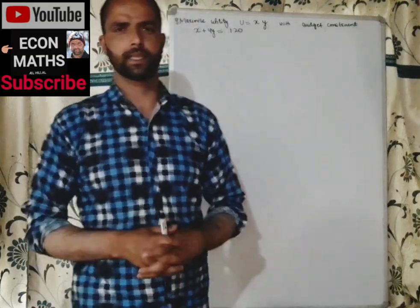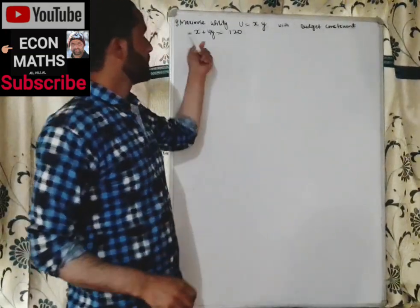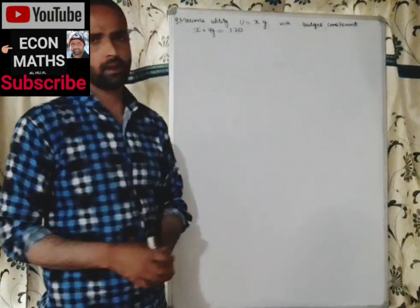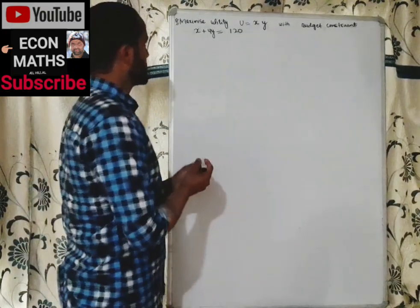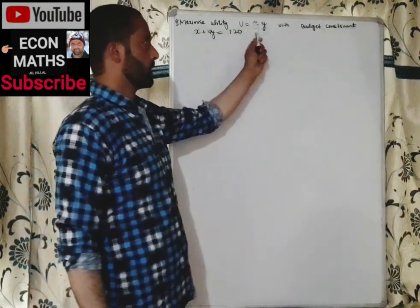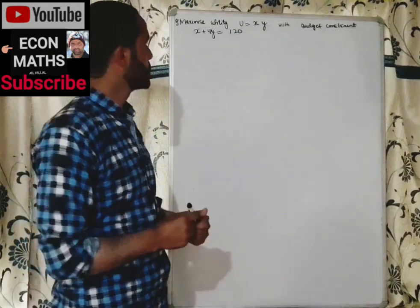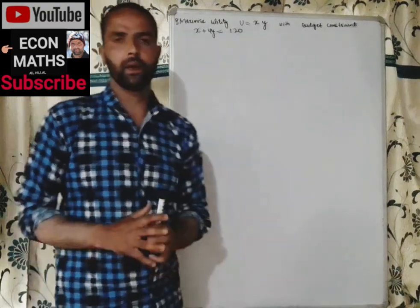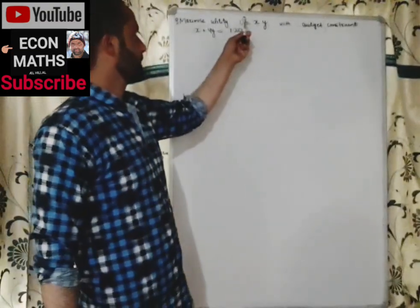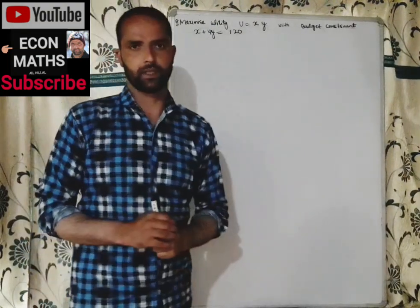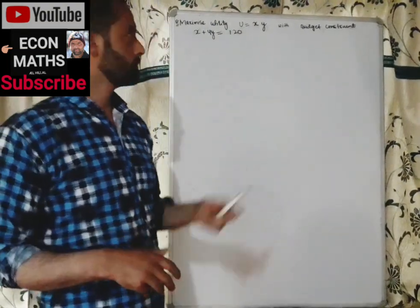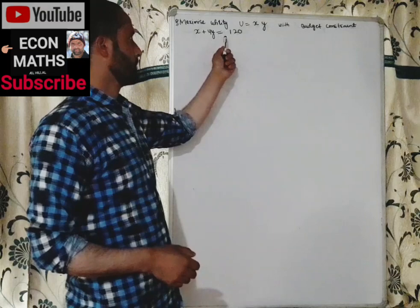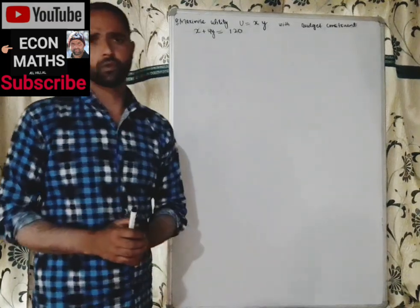In this video on the mathematical economics series, we will try to optimize the given utility function subject to the budget constraint. The question is: maximize utility U = x·y, where x and y are the two goods, with the budget constraint x + 4y = 120. We have an optimization problem with a utility function and a constraint function.